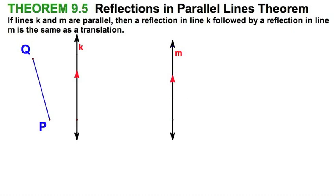I'm going to take this segment and reflect it over k, then reflect it over m. So let's do that. If I reflect it like that, the red is the image of the blue.